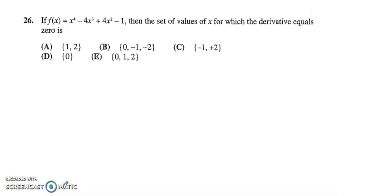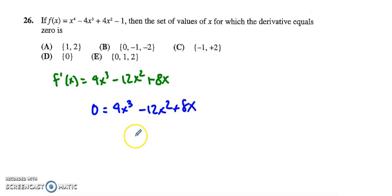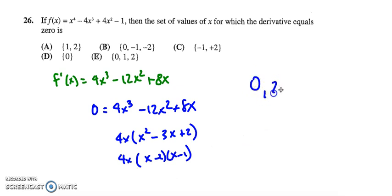Moving on to number 26, we want the derivative to equal 0, so let's differentiate to get f prime equals 4x cubed minus 12x squared plus 8x. Now we set the derivative equal to 0. I can factor out a 4x, leaving x squared minus 3x plus 2, and that factors into (x minus 2)(x minus 1). By the zero product property, setting each factor equal to 0, I solve for 0, 2, and 1, so my answer is E.